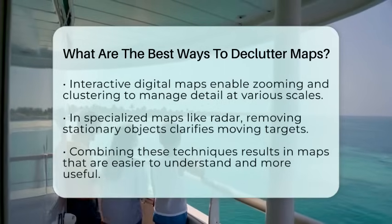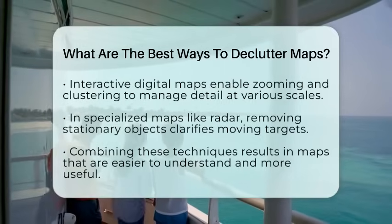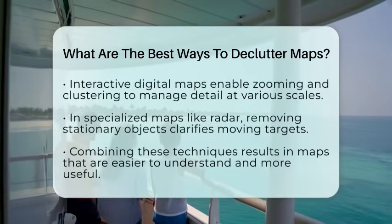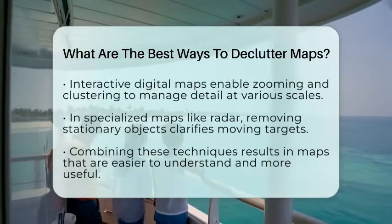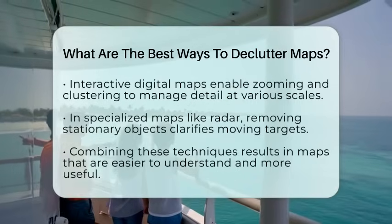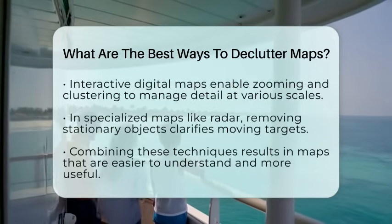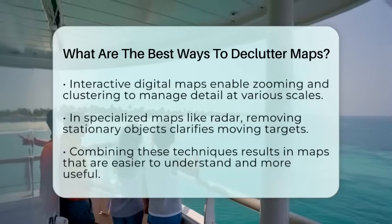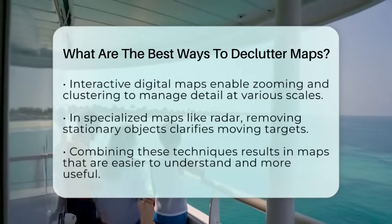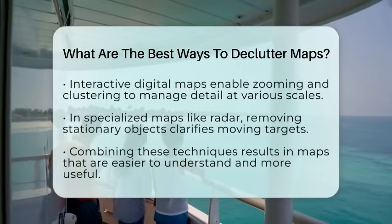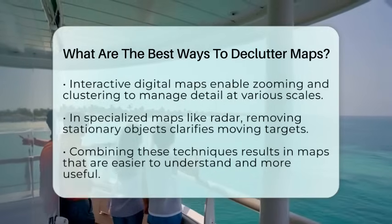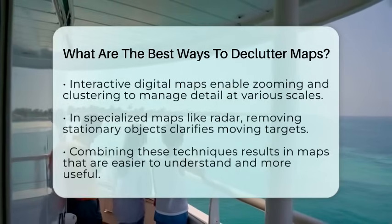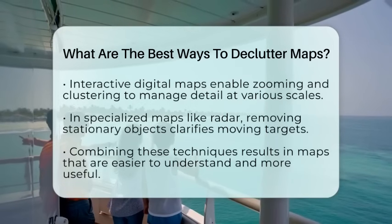By combining these methods — filtering data, generalizing features, managing labels, using white space, establishing visual hierarchy, balancing distribution, defining clear boundaries, and adding interactivity — you can turn a cluttered map into a clear, effective tool. These steps help users quickly grasp geographic information without feeling overwhelmed, making your maps more functional and easier to understand.